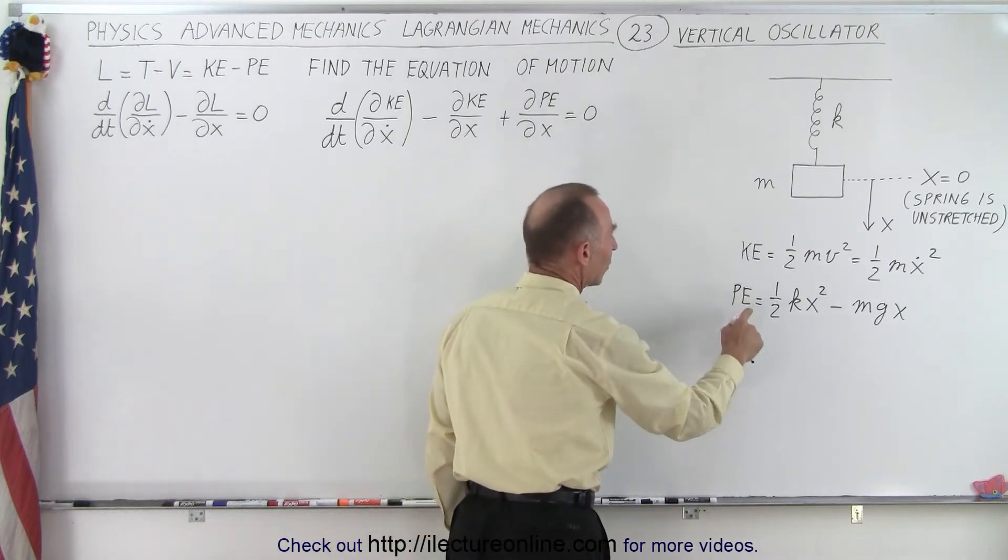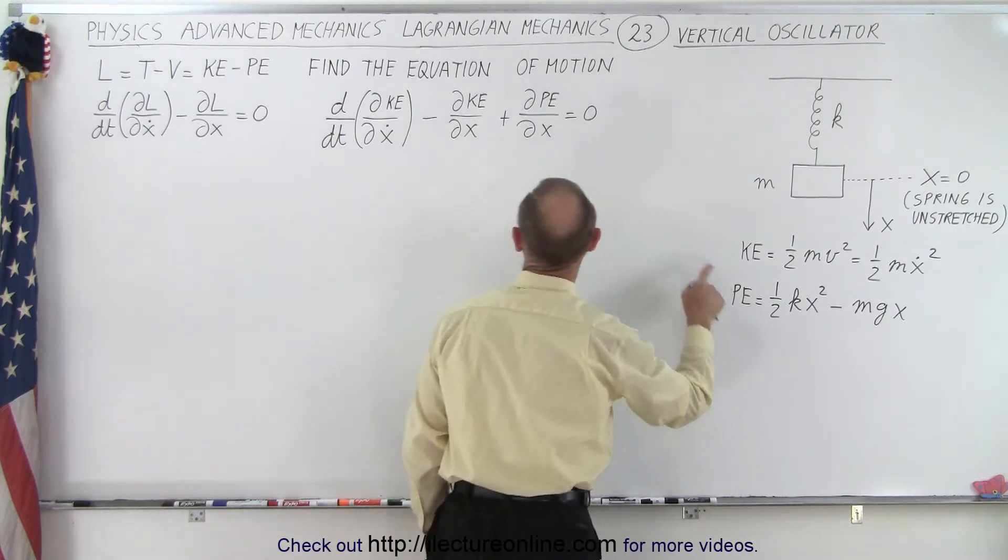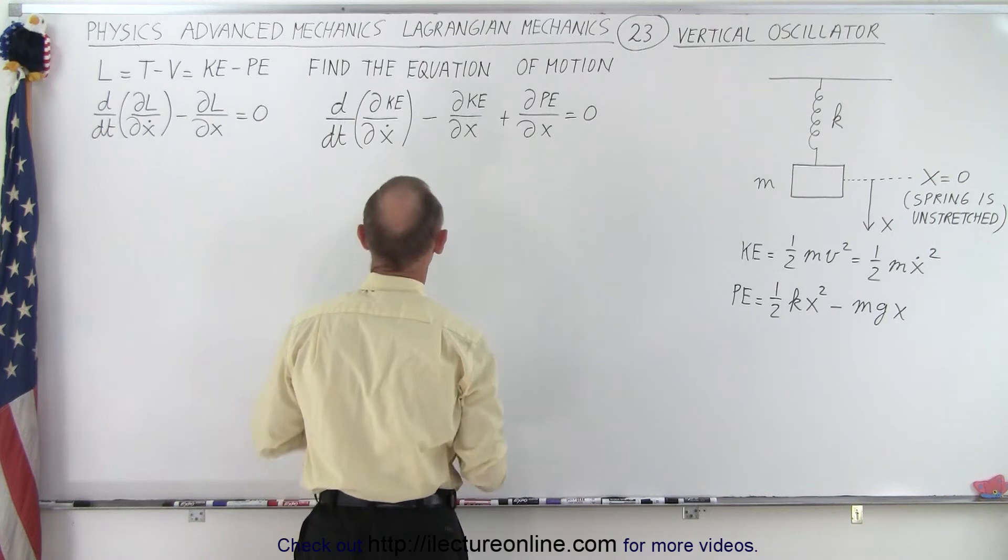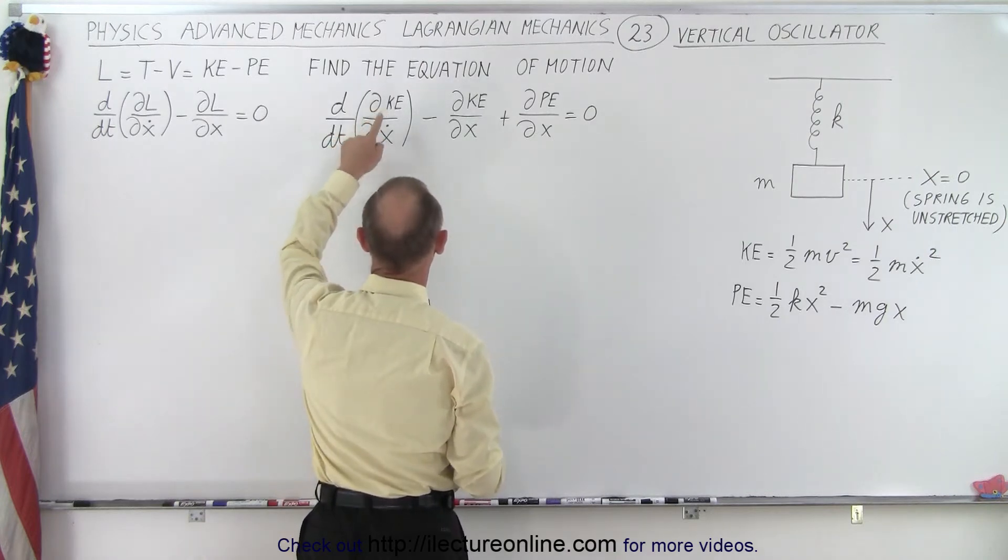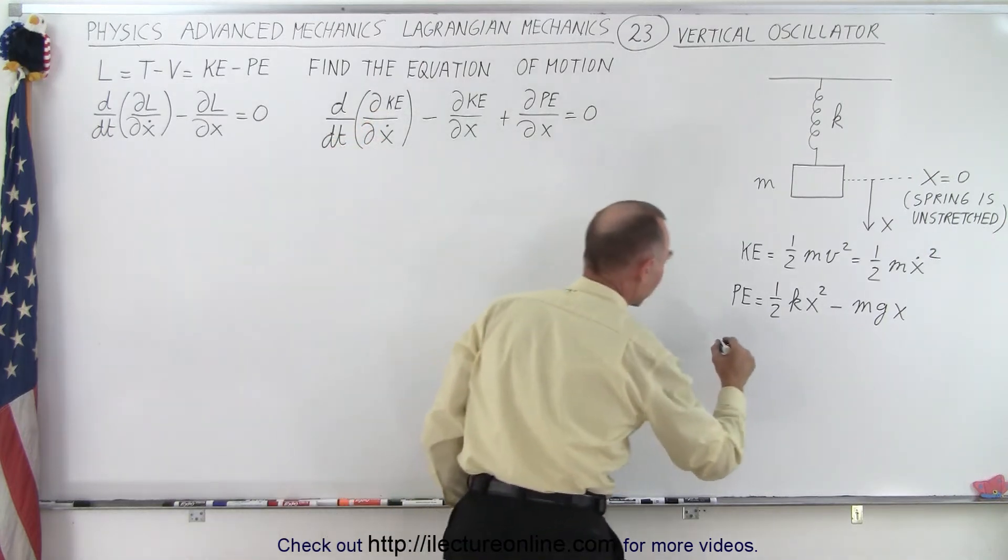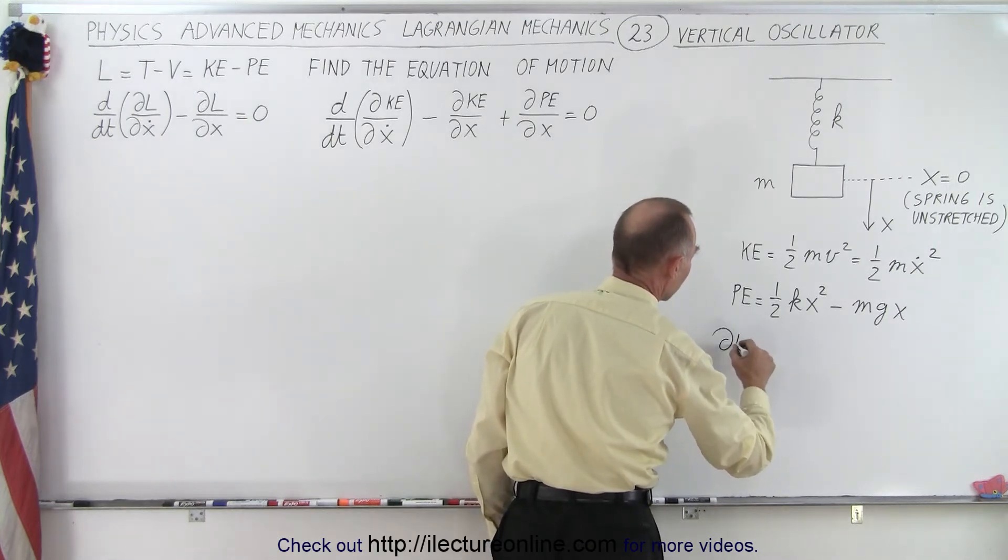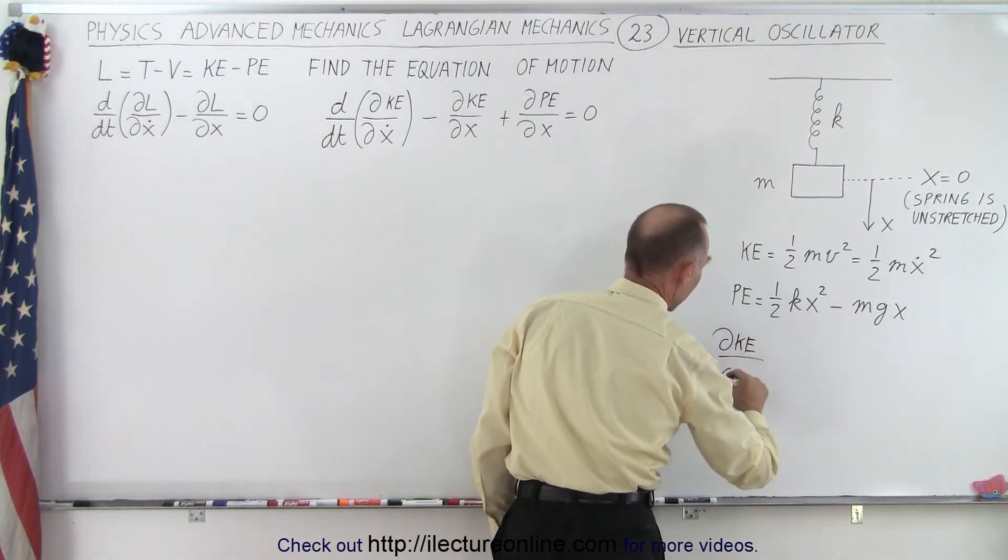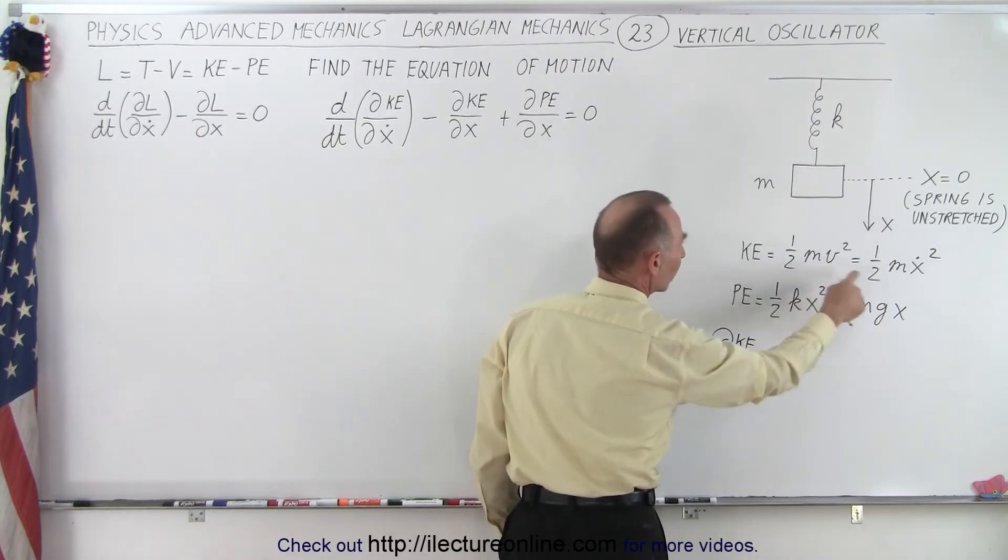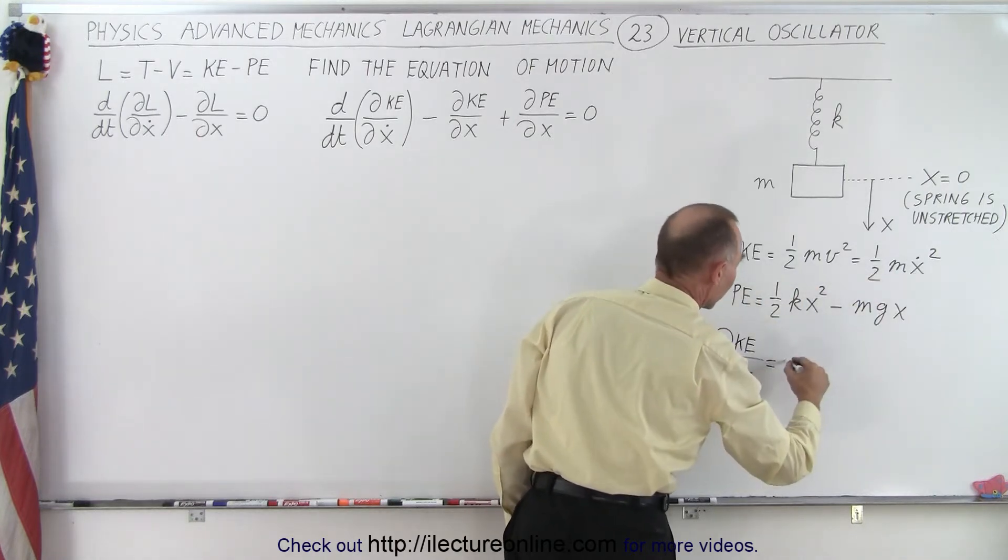Now we have the kinetic energy and the potential energy, and we're going to plug that into this equation. So first, we need to find the partial of kinetic energy with respect to x dot. The partial of the kinetic energy with respect to x dot is equal to the partial of this with respect to x dot, which gives us m x dot.